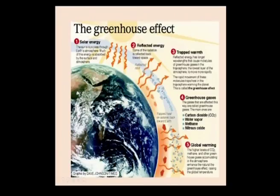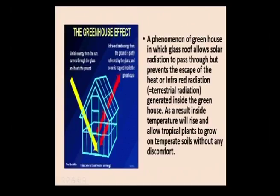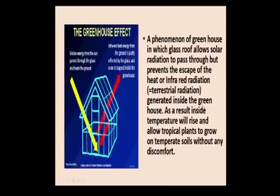For the greenhouse effect, visible energy from the sun passes through a glass house and heats the ground. Infrared heat energy from the ground is partly reflected by the glass and partly trapped inside. Whatever heat energy is trapped inside leads to warming of the inner air temperature. This is exactly what happens at the global level — a phenomenon in which the glass roof allows solar radiation to pass through but prevents the escape of infrared (terrestrial) radiation generated inside, causing the inside temperature to rise.